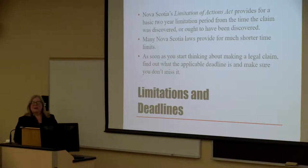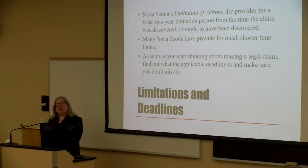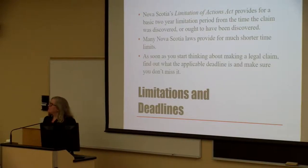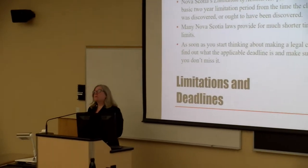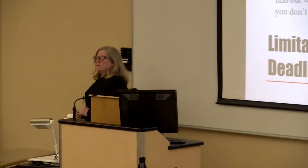If you didn't know you had a claim, the limitation period typically doesn't start to run right away — it runs from the time the claim is discovered or ought to have been. For example, if you get your car fixed and the wheels fall off two months later, the clock starts when the wheels fell off and you knew there was a problem. However, there are more than a hundred other limitation periods in Nova Scotia laws, many shorter than two years — challenging a tribunal decision is six months, and challenging a judge's procedural decision in the Supreme Court is just two weeks.